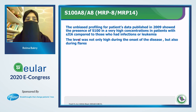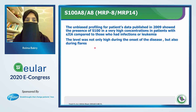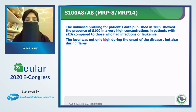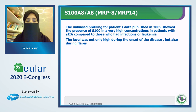From the unbiased profiling data published in 2009, the presence of S100 protein at very high concentrations in patients with systemic JIA compared to those with infections or leukemia was noted — the level was high not only during the early onset of the disease, but also during flares.